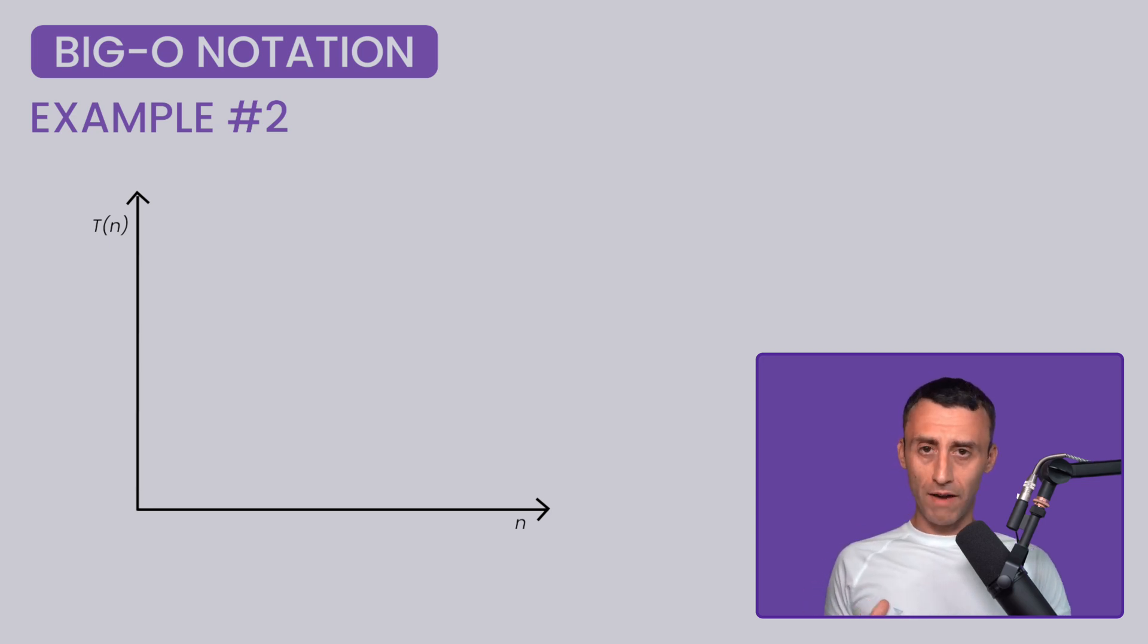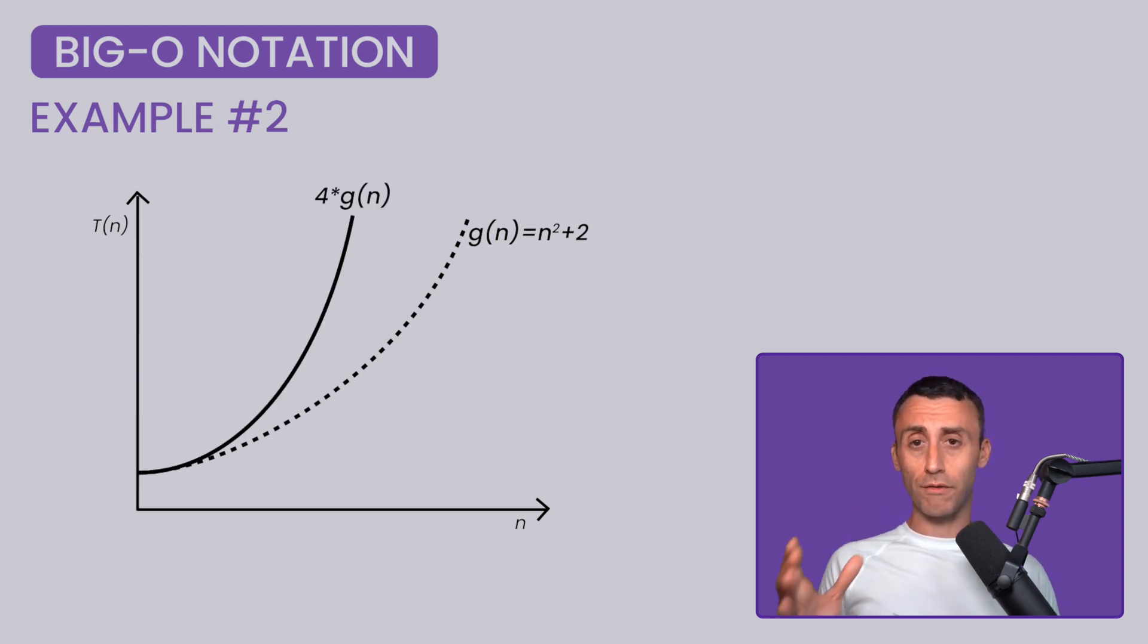Similarly, now let's take a parabolic function. Let's say that g of n equal n squared plus 2. Then, as you can see, if we multiply g of n with a constant, let's say 4, which makes the graph of 4 multiplied g of n, as you can see here. If we define f of n equal n squared, then we'll have f of n less than or equal 4 multiplied g of n for all the values of n greater than 0.